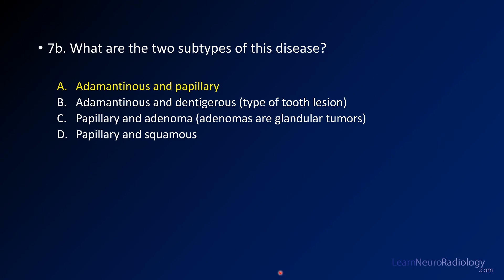As we discussed, the two major types of craniopharyngioma are adamantinomatous and papillary — those are the main subtypes you need to know about.